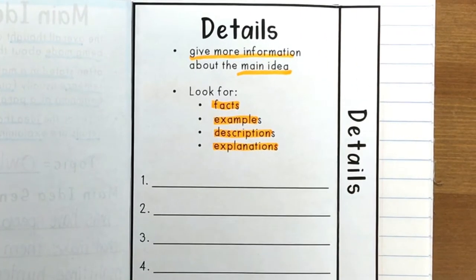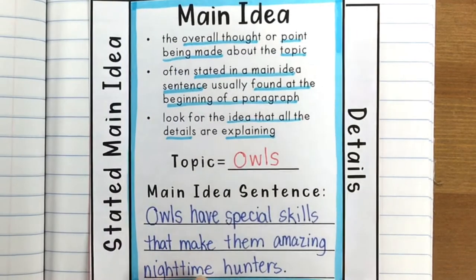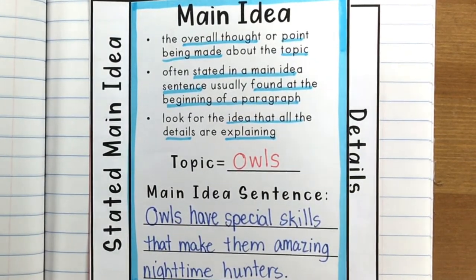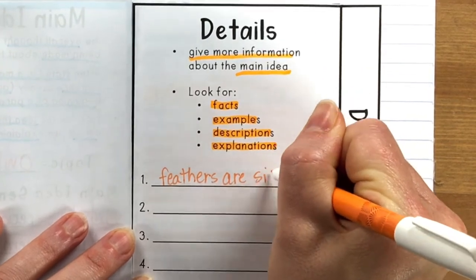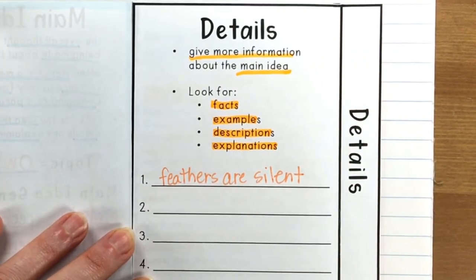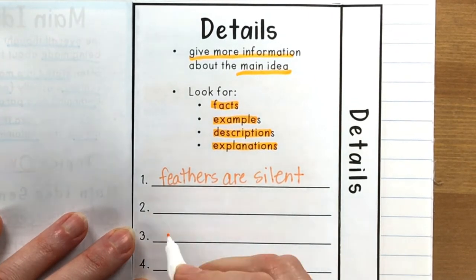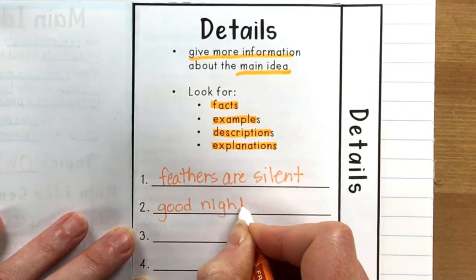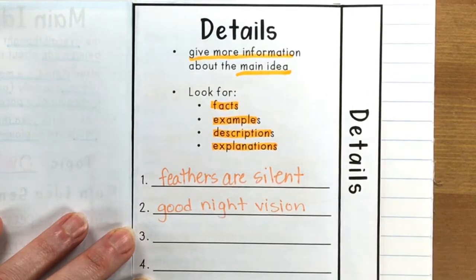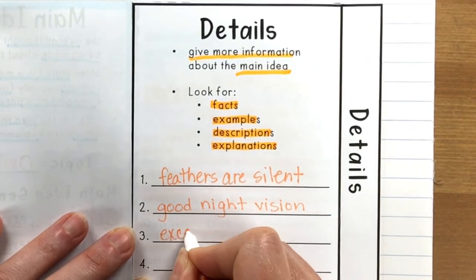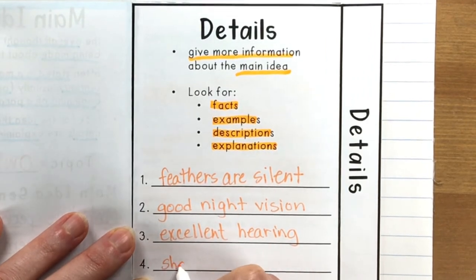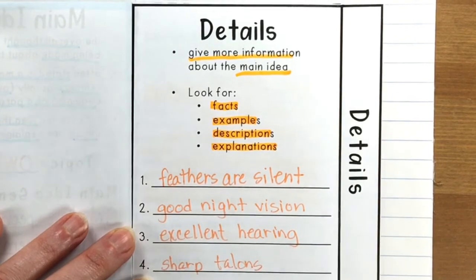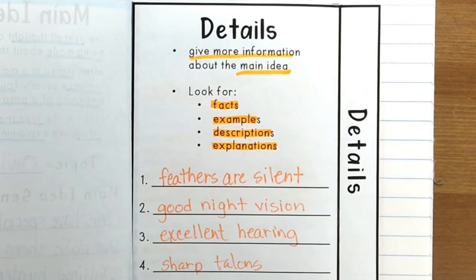Now we're ready to write some of these details down on our foldable. We're not going to write the whole sentence for each one — just the overall thought of that detail and how it supports the main idea. First, their feathers allow them to fly silently and sneak up on prey. Second, they have very good night vision. Third, they have excellent hearing and can pinpoint an exact spot where an animal is. And fourth, their sharp talons allow them to swoop down and quickly catch the animal.